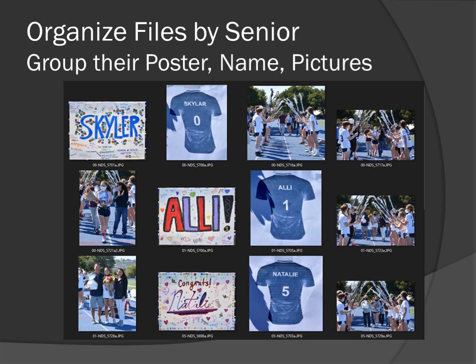Organize the files by senior. The composition shown includes their poster, another poster, and the presentation picture all together. Use the jersey number as the first two characters of the file name — for example, '00' puts all of player zero's pictures together. Then '01' groups Ally's poster, shirt poster, and presentation. '05' groups Natalie's pictures the same way, so seniors and parents have one place to go rather than pictures scattered across files.